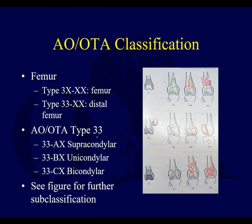The distal femur is bone number three at the distal end — segment three — so these are type 33 fractures. Any periarticular fracture has type A, B, and C. A periarticular type A is an extra-articular fracture — supracondylar fractures essentially. Type B is a partial articular fracture. We usually say B for buttress plate — like a unicondylar tibial plateau fracture, for instance Schatzker IV.